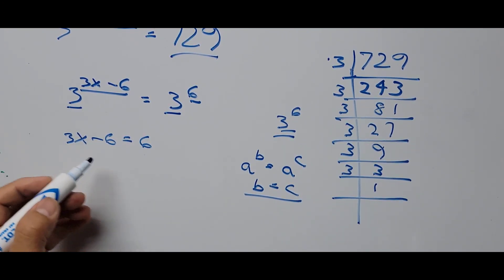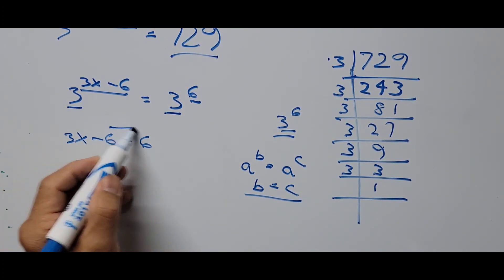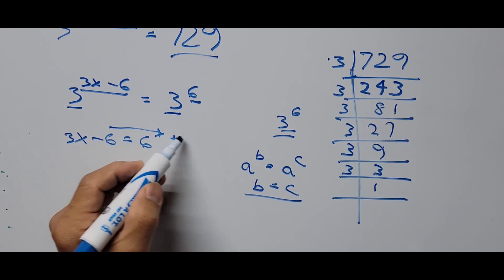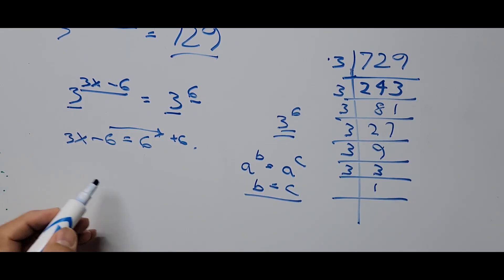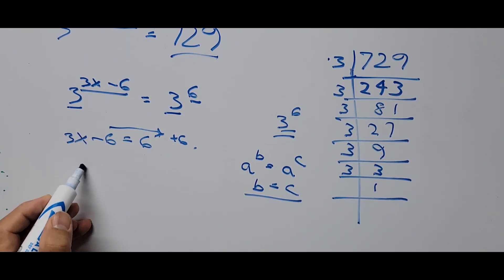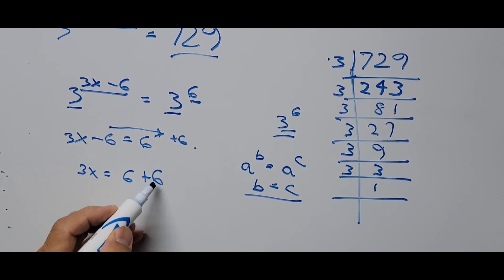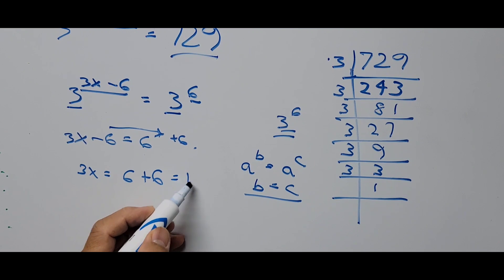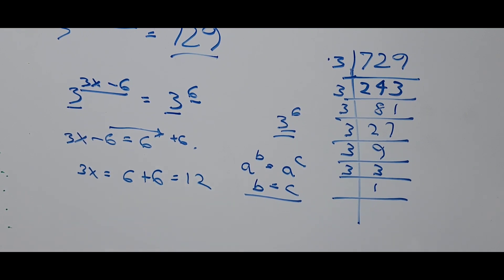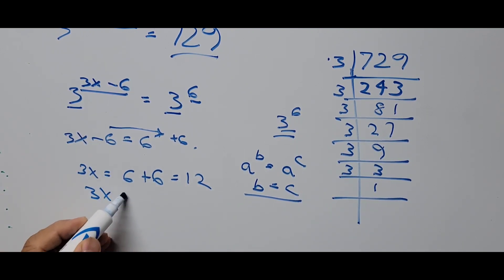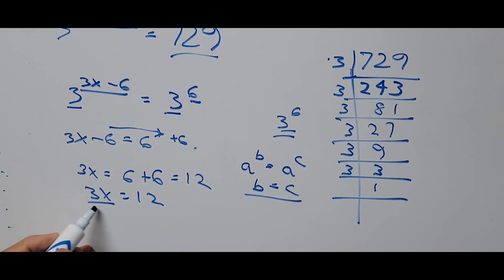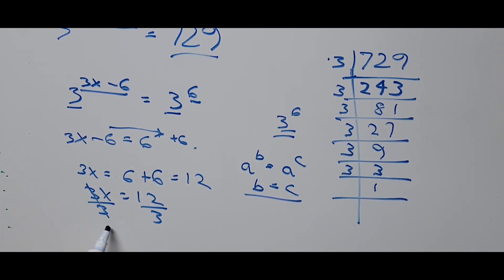Simplifying this equation: transposing negative 6 to the other side gives positive 6, so 3x equals 6 plus 6, which equals 12. Dividing both sides by 3, x equals 12 divided by 3, which is 4. So our final answer is x equals 4.